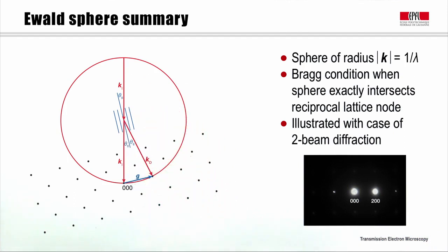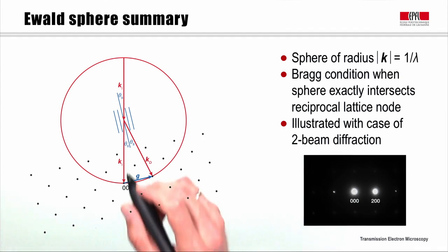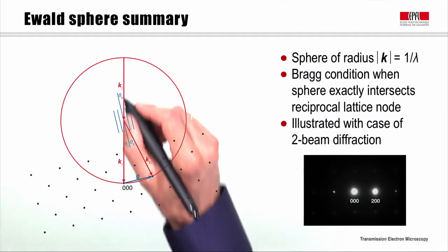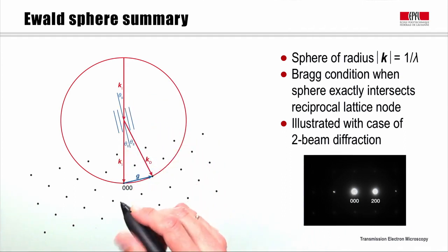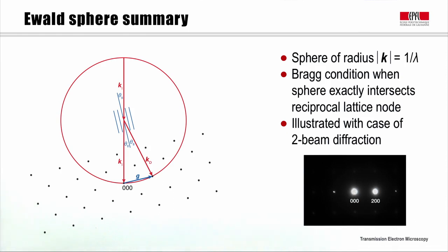However, in electron diffraction we can have another scenario, where instead of the incident electron beam being inclined relative to a particular crystal plane, it is in fact parallel to many different crystal planes at the same time, with the electron beam aligned on a low-index zone axis of the crystalline sample. In this case we obtain strong diffraction on many different planes, giving a diffraction pattern with many bright spots — so-called multi-beam electron diffraction. And that's what we will look at in the next lecture.